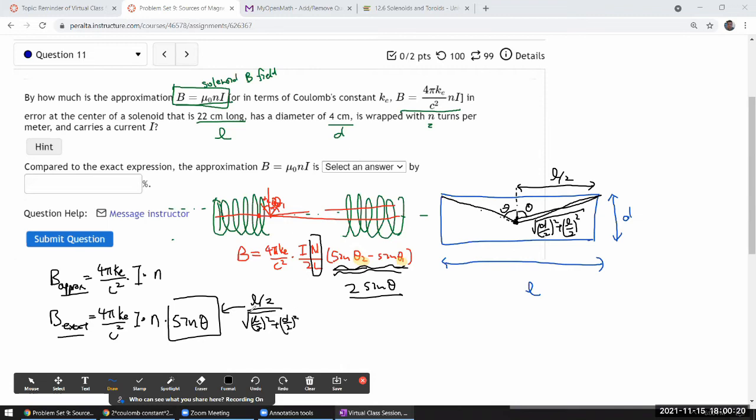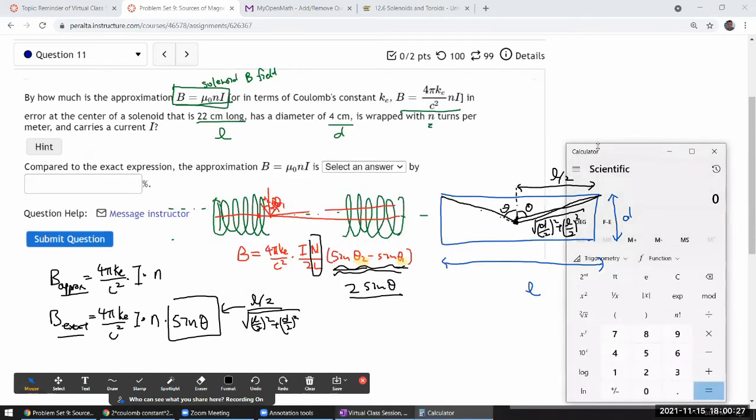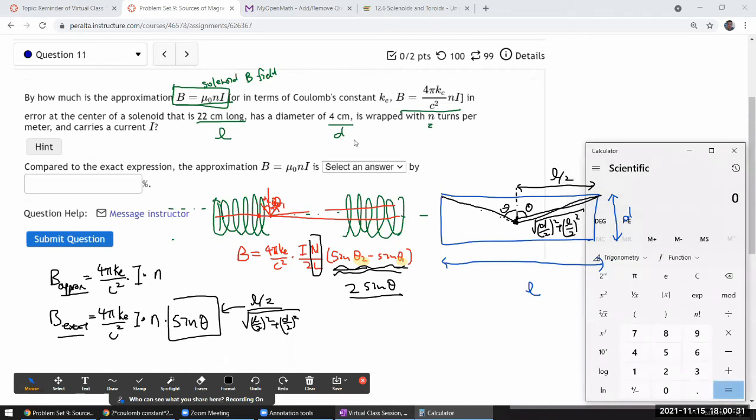I'll get a numerical value based on the given values of L and d. Plugging everything in centimeters: 22 divided by 2 is 11, divided by the square root of 11² plus 2². Let me press equals to get the numerical value.